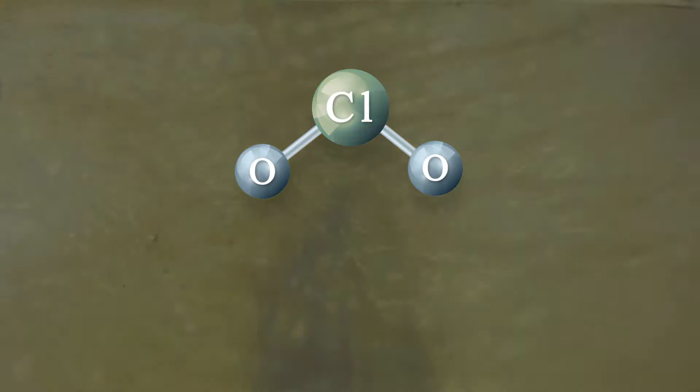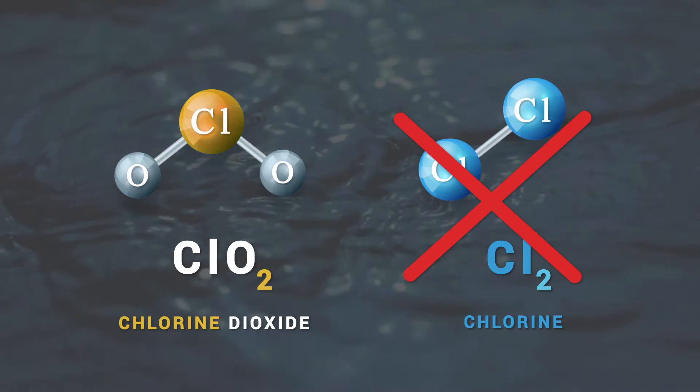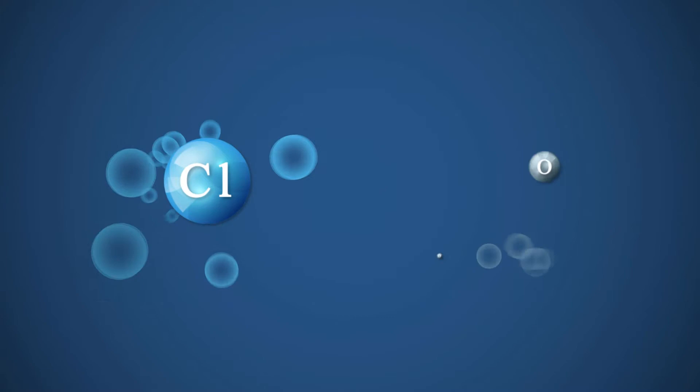ClO2 is formed when a chlorine ion creates an extremely strong bond with an oxygen molecule. The result is a potent oxidizing and disinfecting weapon against all pathogens.